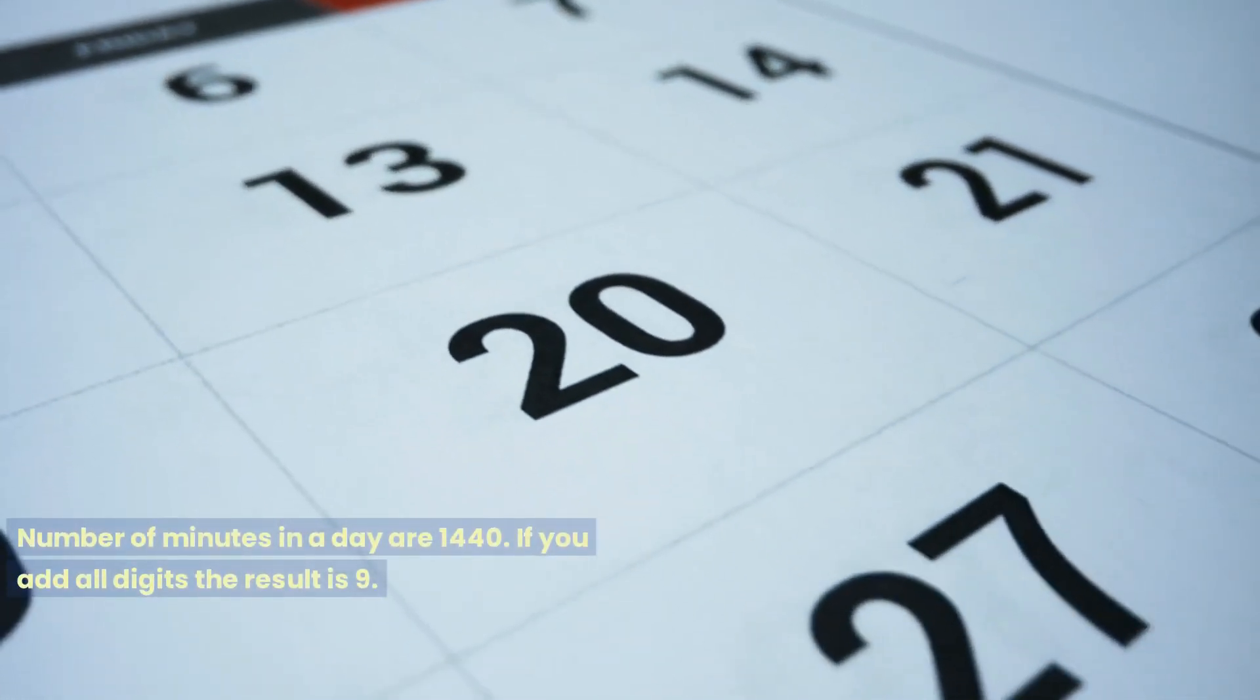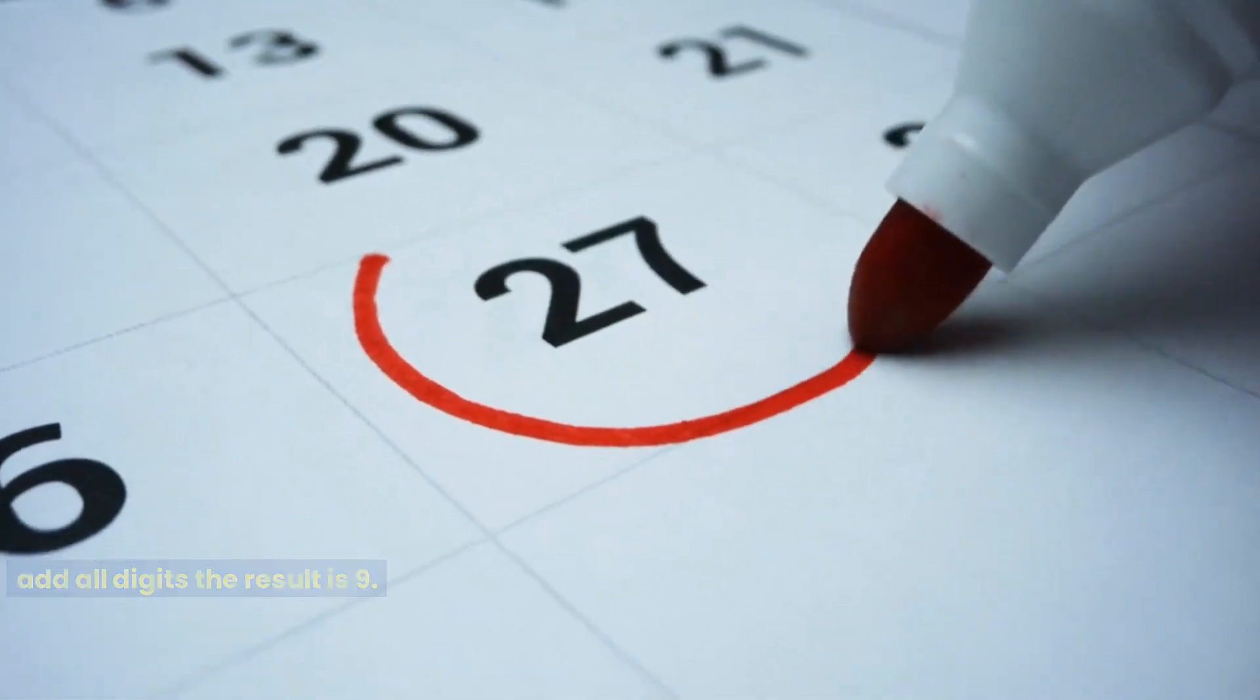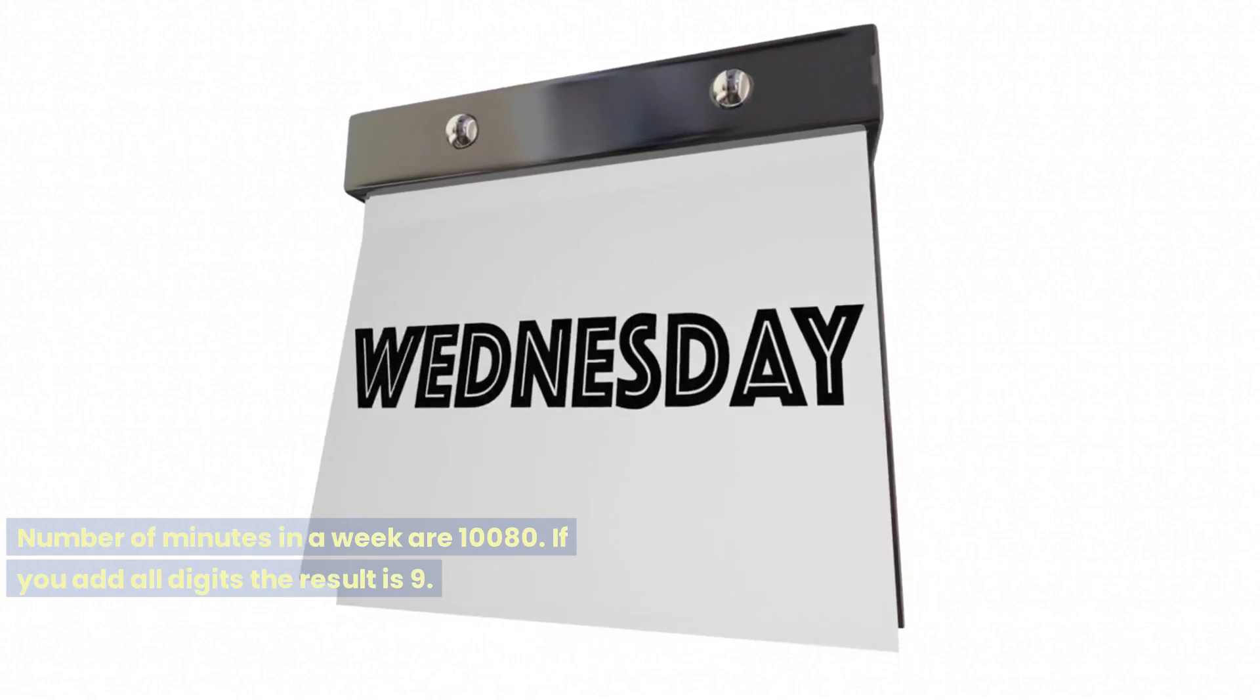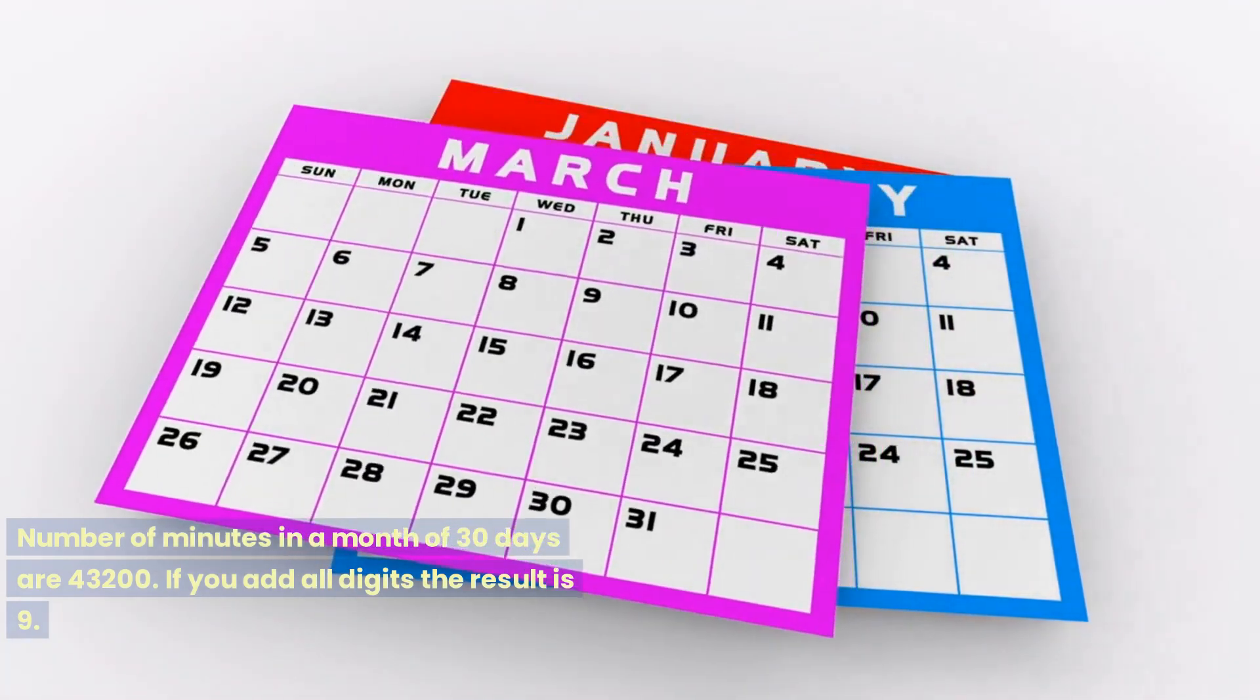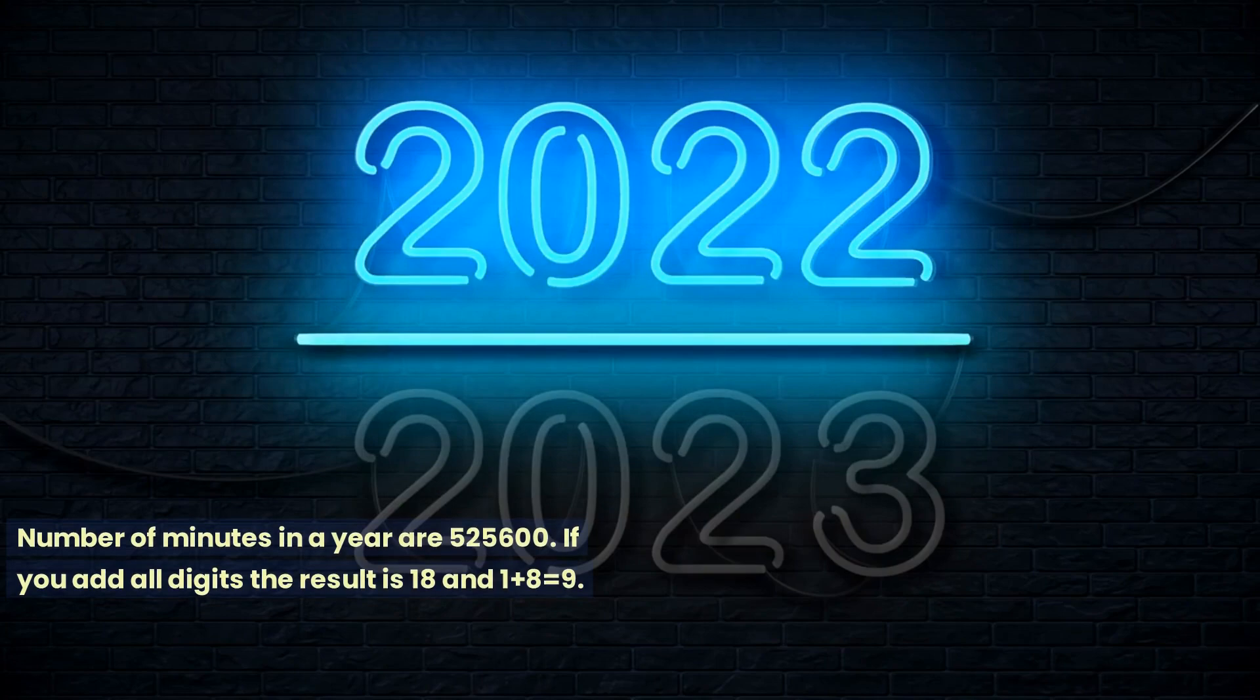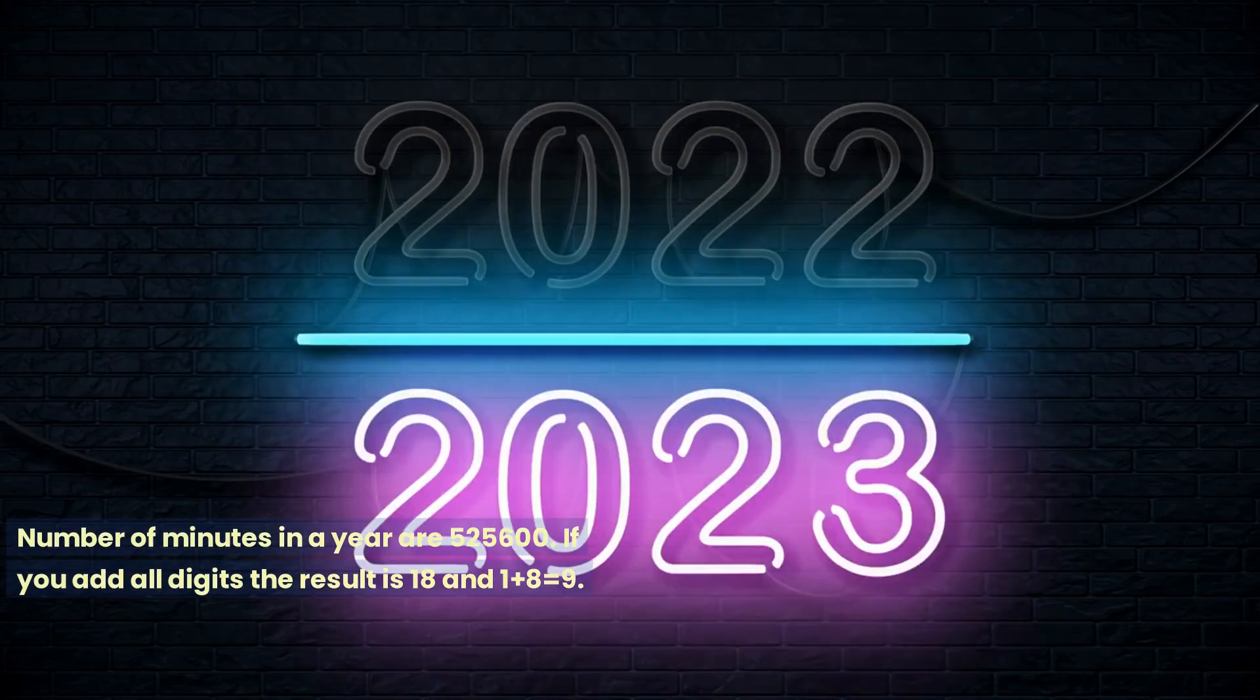Number of minutes in a day are 1,440. If you add all digits the result is 9. Number of minutes in a week are 10,080. If you add all digits the result is 9. Number of minutes in a month of 30 days are 43,200. If you add all digits the result is 9. Number of minutes in a year are 525,600. If you add all digits the result is 18 and 1 plus 8 equals 9.